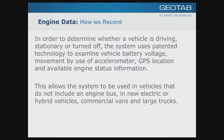Moving on to engine diagnostics. To determine whether a vehicle is driving, stationary, or turned off, the system uses patented technology to examine vehicle battery voltage, movement via accelerometer, GPS location, and available engine status information. Because the device plugs directly into the engine diagnostics port, it can detect battery voltage and — even in two-wire mode without ignition info — determine based on voltage and accelerometer if the vehicle has started moving.